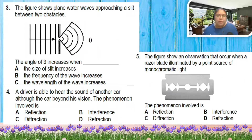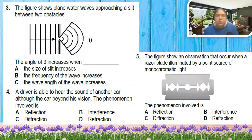Number three: it shows a plain water wave approaching a slit between two obstacles. When the angle increases, the wave becomes more circular. More circular means the gate must be smaller. So from here, the size of the slit increases - that's out. The frequency of the wave increases - not related. The wavelength of the wave increases - yes, wavelength is one of the factors.